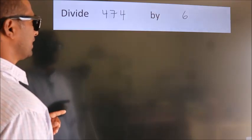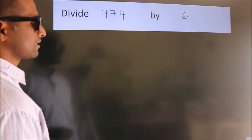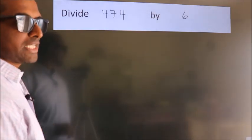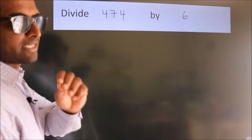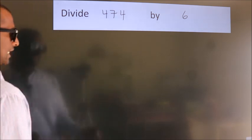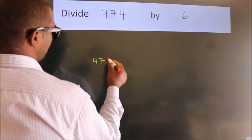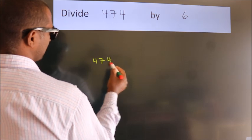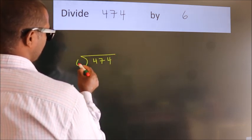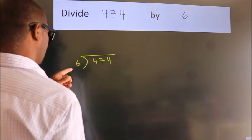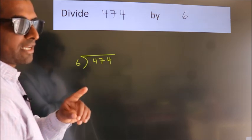Divide 474 by 6. To do this division, we should frame it in this way: 474 here, 6 here. This is your step 1.